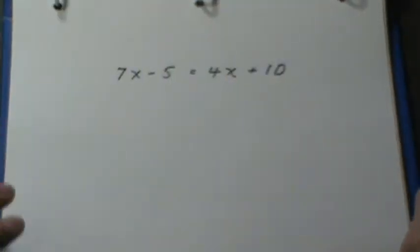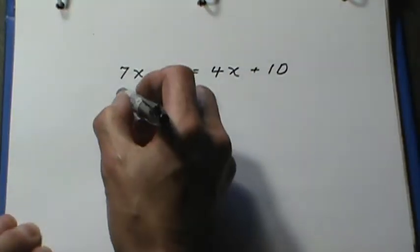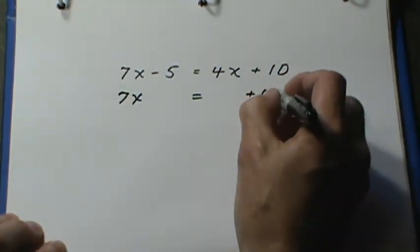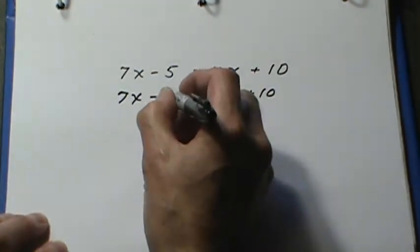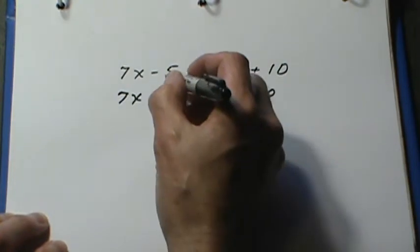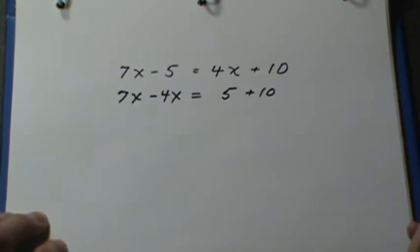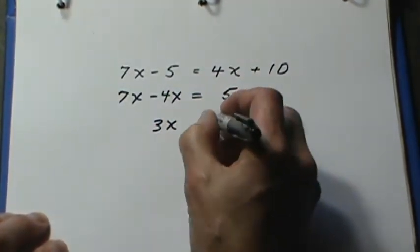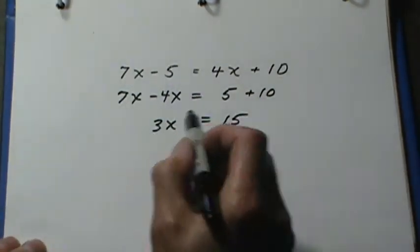One last example. Once again, I'm going to keep the 7x here and I'll keep the plus 10 over on that side. I'll move the 4x, write it as minus 4x on the left. Take the minus 5, write it as plus 5 on the right. 7x take away 4x leaves us with 3x. And on this side we have 15. Now this is the first example where I've been left with a number in front of the x.